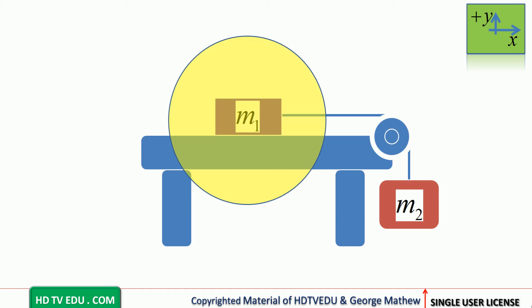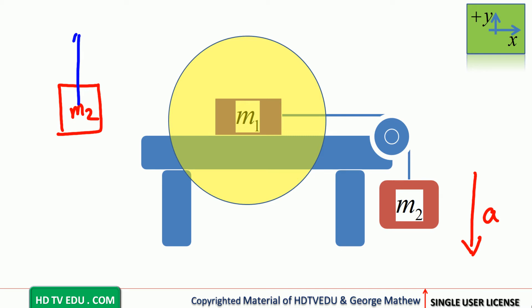We know M1 is accelerating to the right. M1 and M2 are tied by the string, so M2 accelerates down. The direction of acceleration is vertically down. Let us isolate mass M2. Remember, tension is a pulling force, so it pulls away from mass M2 — tension acts vertically up.